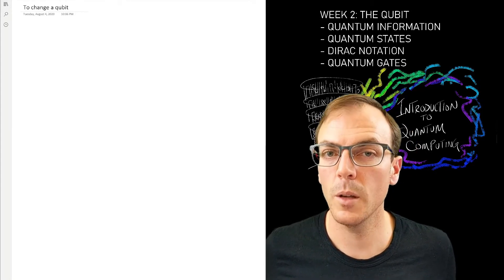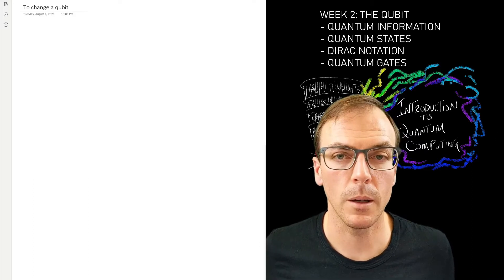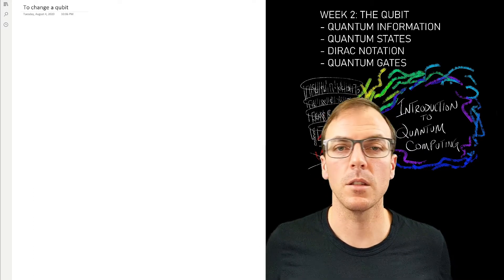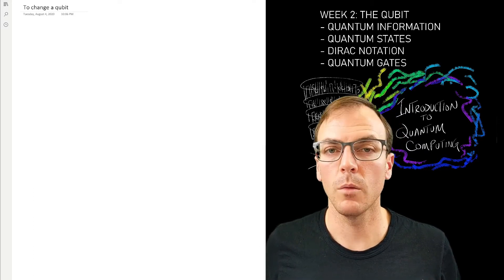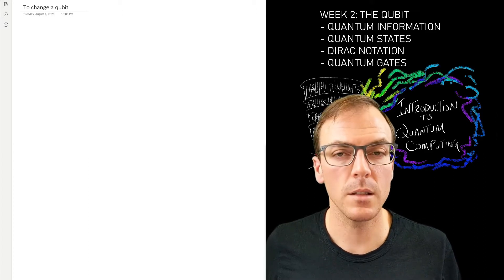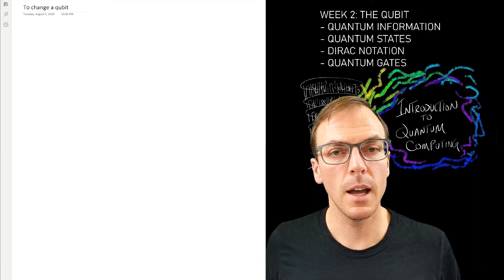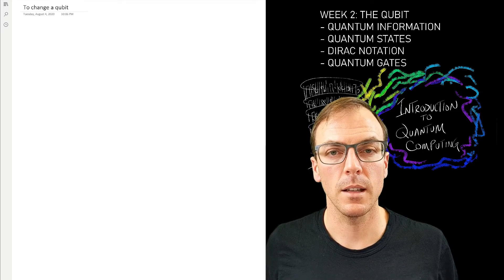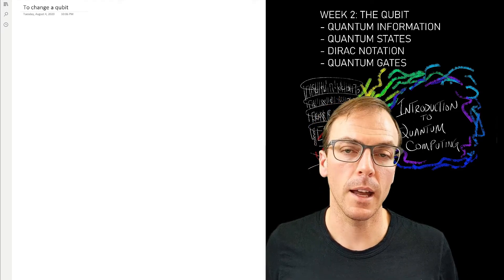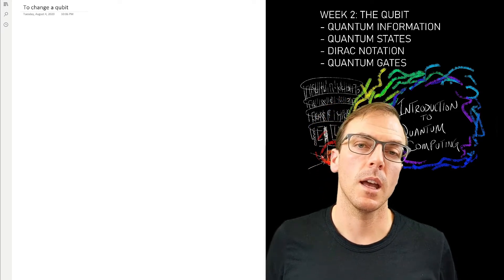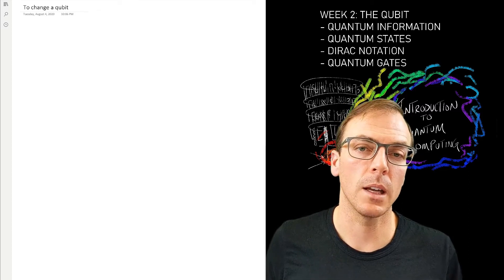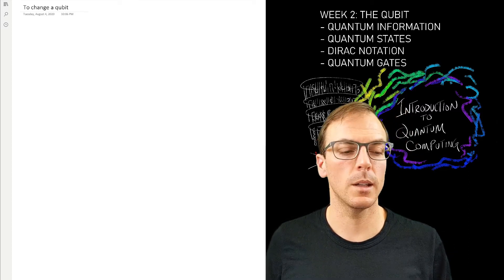This is Introduction to Quantum Computing, week number two, where we're talking about the qubit. This is the third topic. We've already spoken about what a qubit is, what a state is, how we represent that with linear algebra and using Dirac notation. Now we're going to talk about how we can change the state of the qubit.